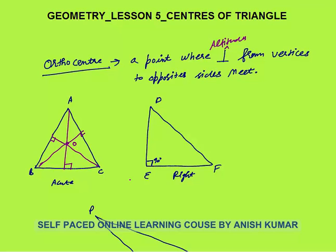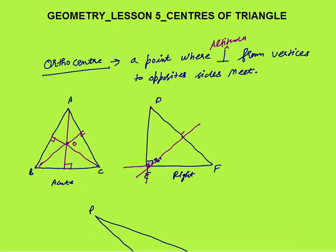Now, where will the orthocenter lie in a right angle triangle? Consider right angle triangle DEF. You draw perpendiculars from vertices to opposite sides. From vertex D, the opposite side is EF — there is already a perpendicular at point E. From vertex F, there is a perpendicular on DE at point E. From vertex E to DF, this will also be a perpendicular. These three altitudes meet at point E.